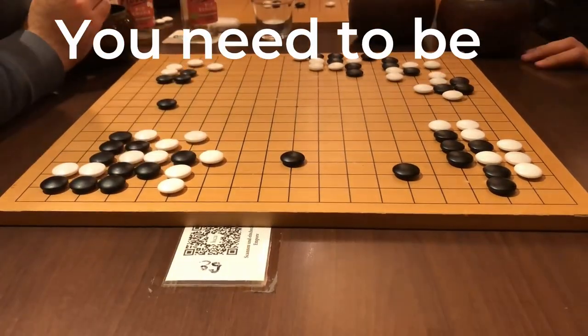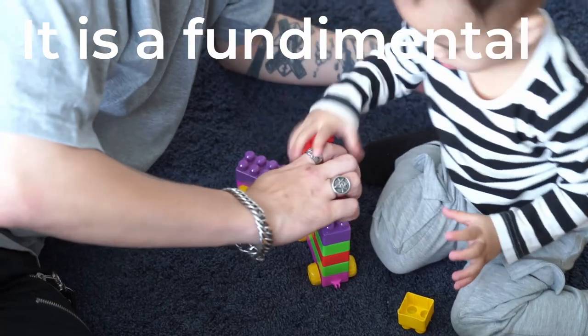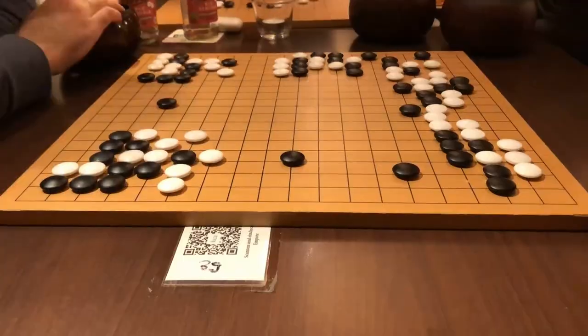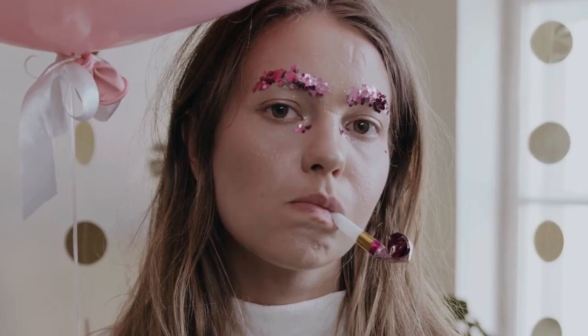If you want to be any good at go, you need to be familiar with the two-space base. It is a fundamental go position. A base is something that has potential for making eyes, although a base is not invulnerable.